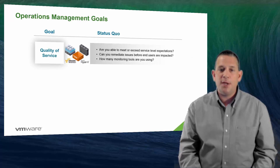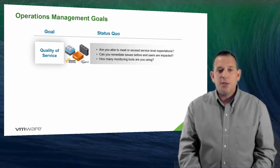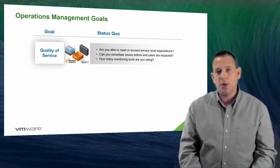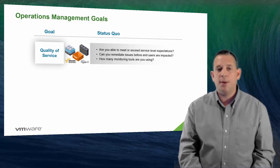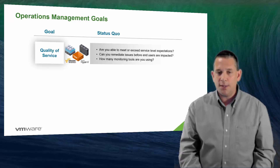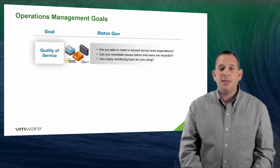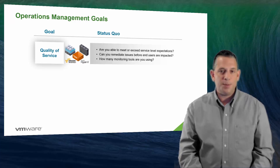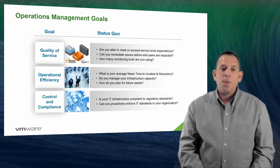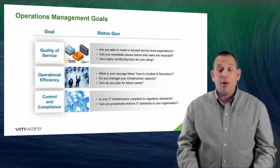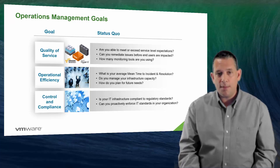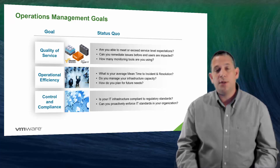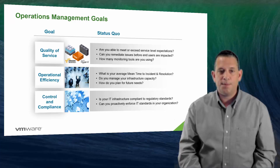Let's shift our focus to operations management and look into the key goals. What are you trying to accomplish? What are you being measured against? What are you trying to deliver on? Most organizations' IT operations are focused on three goals: delivering a high quality of infrastructure, QoS, services and applications; operating IT assets as efficiently and cost-effectively as possible; and implementing and adhering to IT policies, standards, and regulatory requirements. These are the three core areas that most IT departments focus on to ensure they are running efficiently, effectively, and cost-effectively.